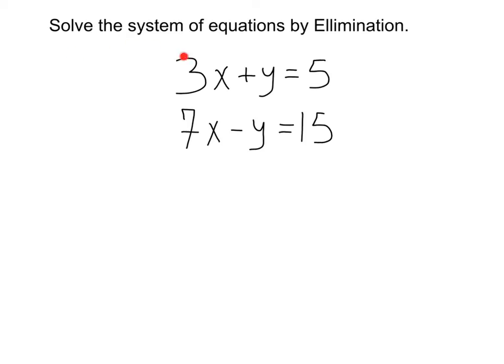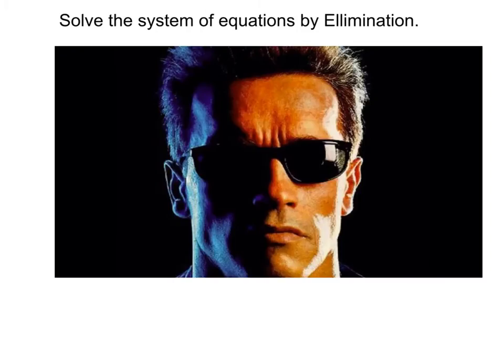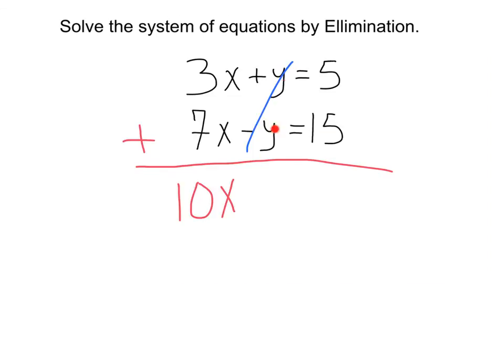Here we've got a system that we want to solve by elimination. 3x plus y equals 5, and 7x minus y equals 15. Let's see what happens when we add these bad boys. We're going to get 3x plus 7x. That's going to be 10x. Then we've got y minus y, which is going to be eliminated! Y minus y is 0. That goes away. Then we've got 5 plus 15, and this is all going to equal 20.